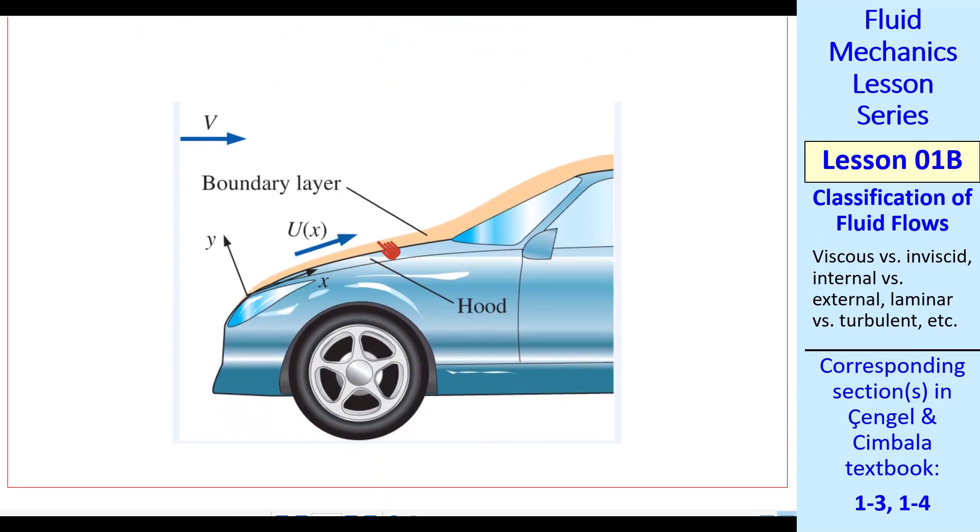You can actually have boundary layers without walls, but we're not going to go into that much detail right now. Here's a sketch of a car with a boundary layer. You can see that this is exaggerated, actually. The boundary layer would, in real life, be more thin than this. Everything in the boundary layer would be the viscous region. Everything outside the boundary layer would be the inviscid region. Later on in the course, we'll be able to calculate things like this velocity profile through the boundary layer.